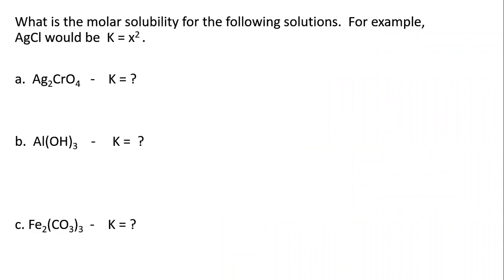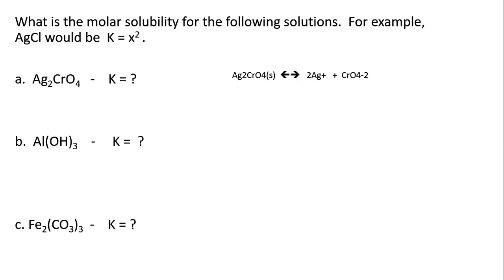The latter part of this chapter covers Ksp, or the molar solubility of an ionic compound. We can calculate the expression for the molar solubility of a particular ionic compound. When we write the equilibrium dissociation of an ionic compound, for example, silver chromate is a solid that dissociates into silver⁺ and chromate ions, and from this we can get the molar solubility expression.